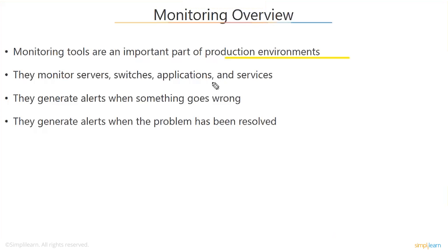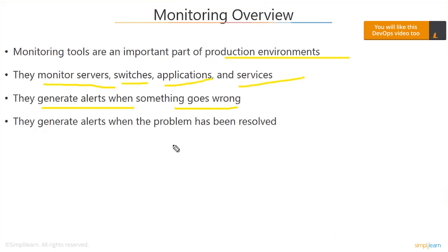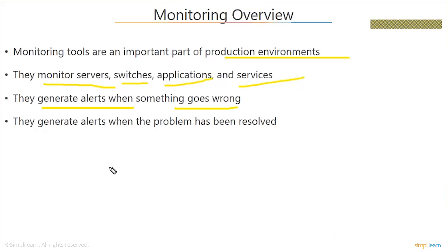But this particular chapter is more in context with the production environment. So these tools basically monitor your server, they monitor your switches, they monitor your applications and any services that you have deployed on your servers. And they generate alerts when something goes wrong. That's the whole job of monitoring — it is continuously watching, continuously looking at what is running, what is happening, what is going up, what is going down, when is CPU peaking, when is memory peaking. You typically set limits for all these different parameters, and any time any of these parameters goes outside of that limit, these monitoring tools usually send out an alert. These alerts could be SMS alerts or email alerts, and there are usually people monitoring these tools to look out for any issues reported.